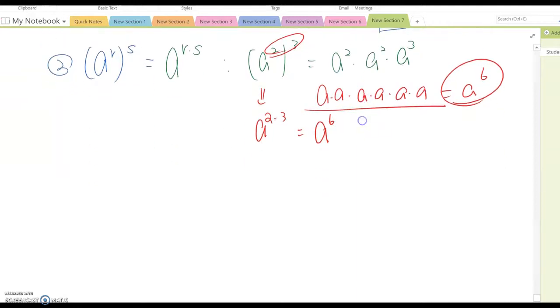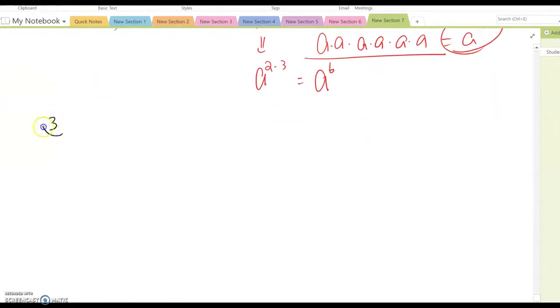Now, third one, which is A, B to the R power. What is this property? Yes, this will be A to the R, B to the R.